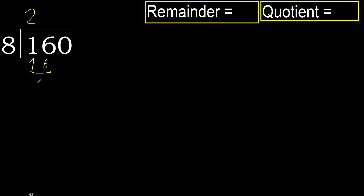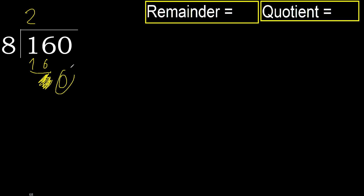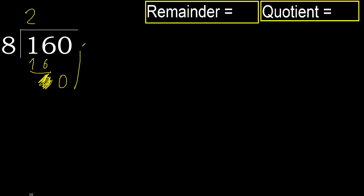16 minus 16 equals 0. Next, eliminate 0 on this side. 0 — but 0 is less, therefore next.